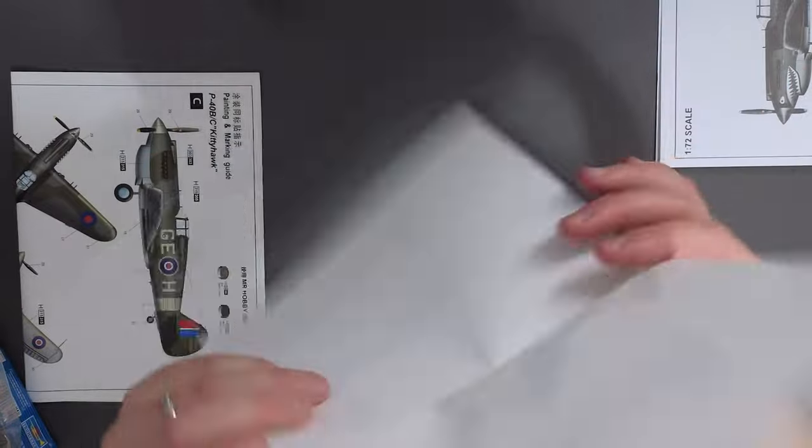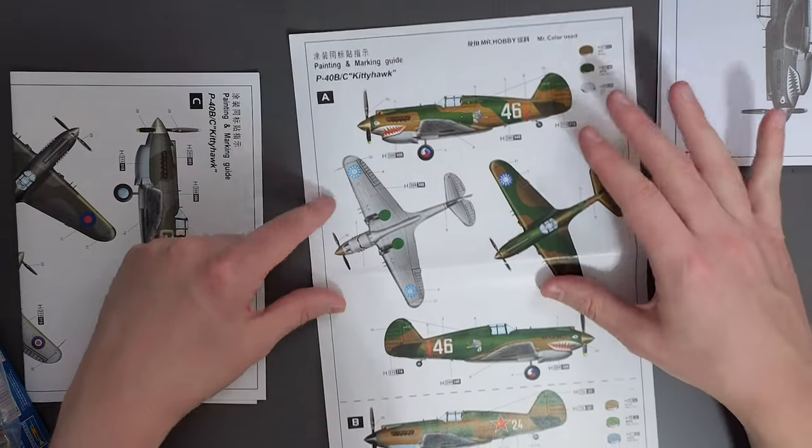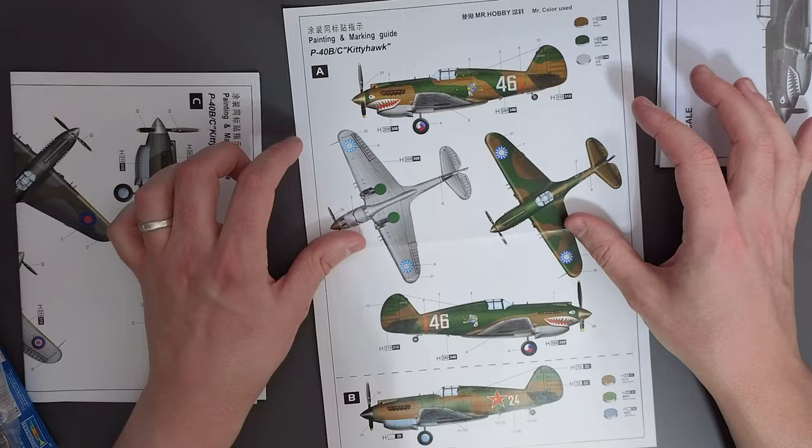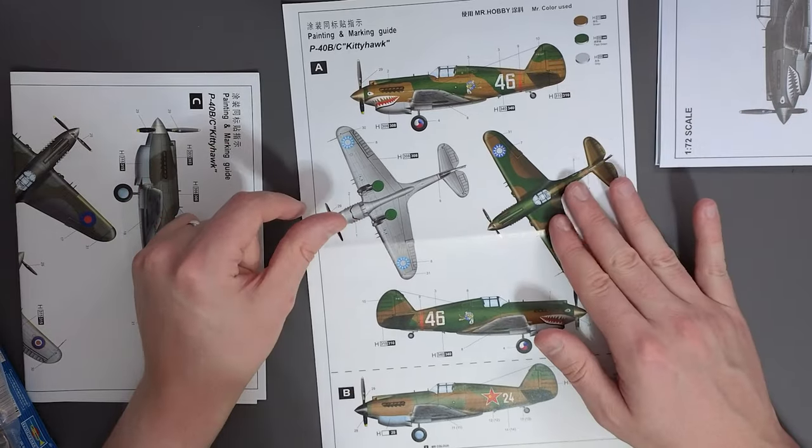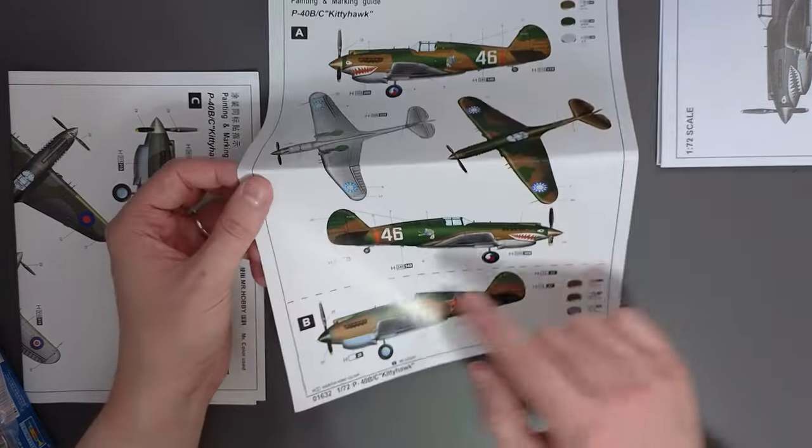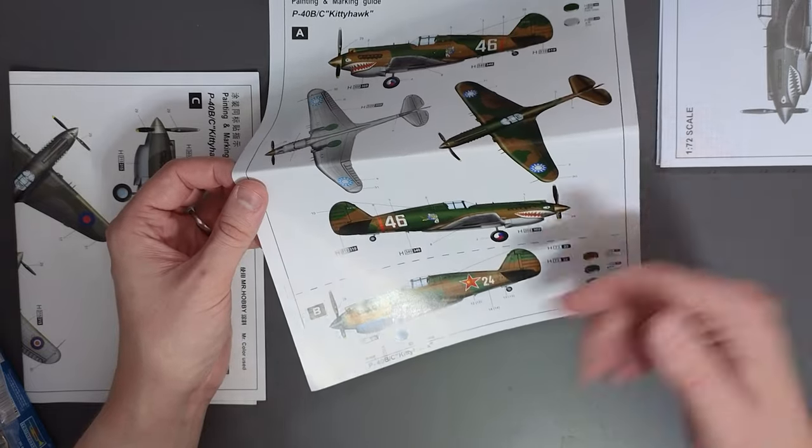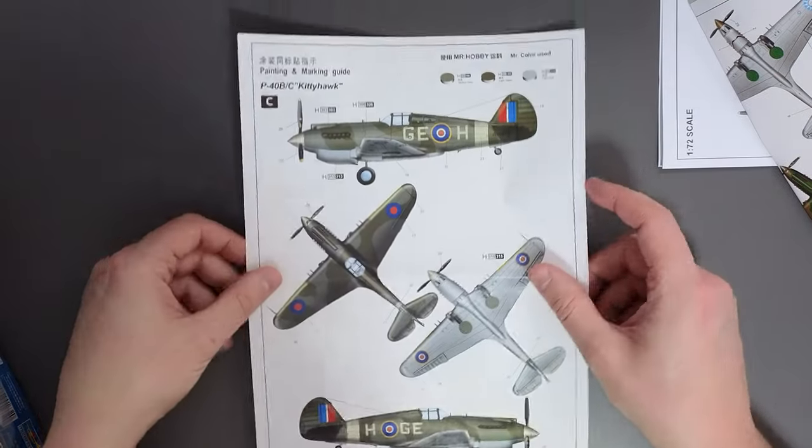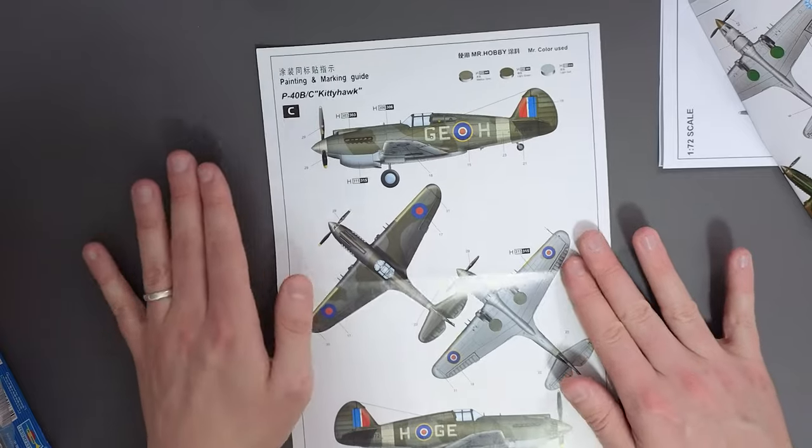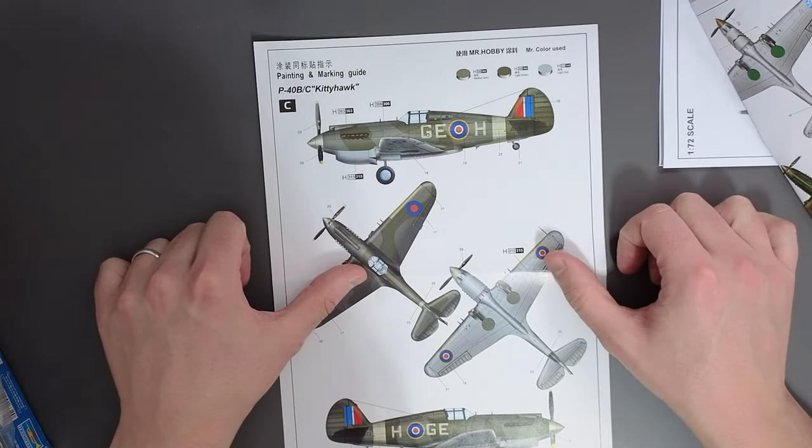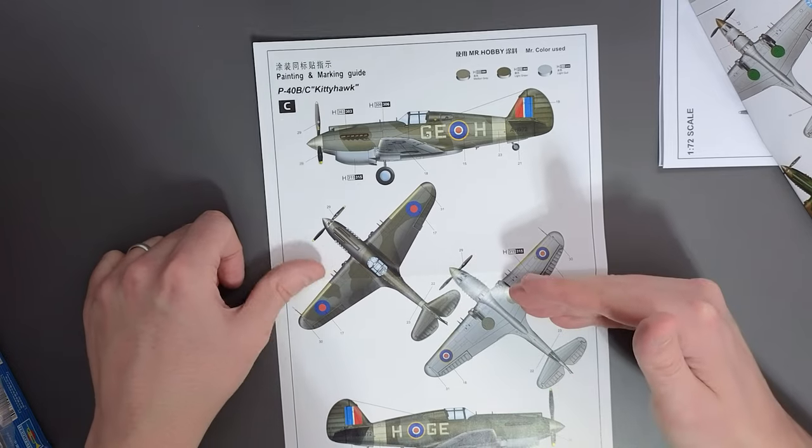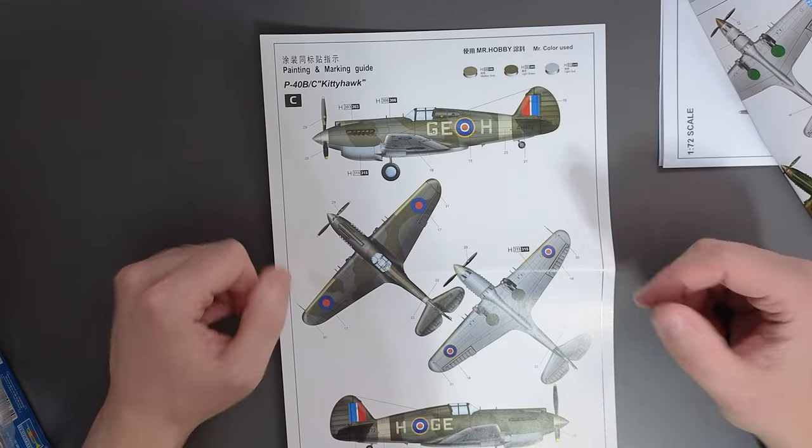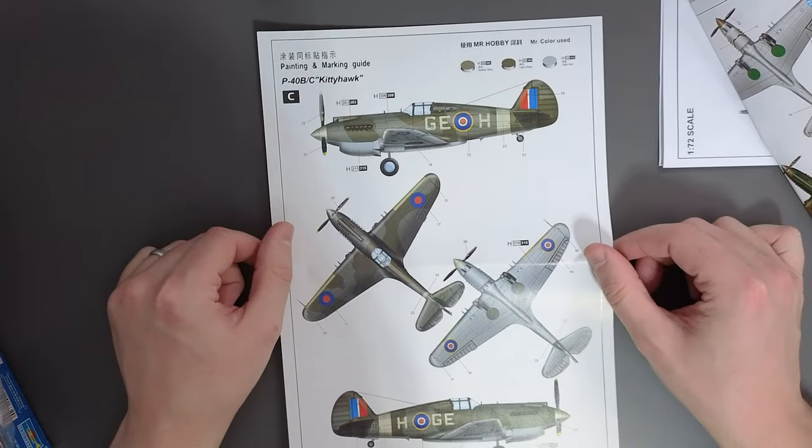However you'll notice that the instruction sheets don't give you a great deal of information. They don't give you any historical context or background regarding these aircraft. So if you didn't know this was a Flying Tigers aircraft then it doesn't tell you. Additionally I'm making the assumption that this is a Lend Lease Russian aircraft because it again doesn't tell us. The scheme that I want to do is this one and it is for an RAF version and it has the light grey lower sides and dark grey and dark green uppers as well.